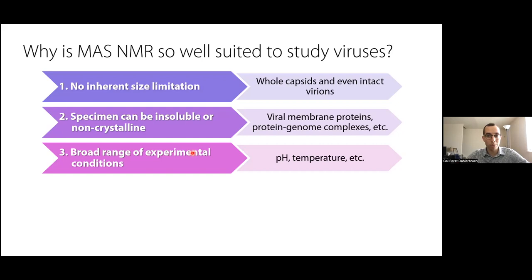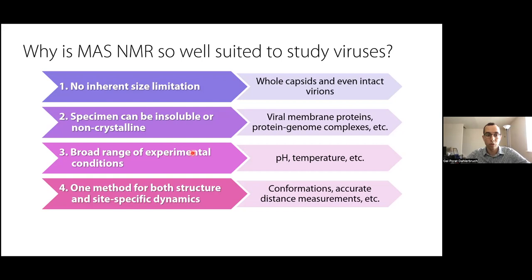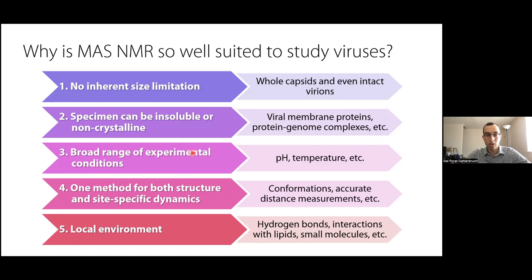Third, a broad range of experimental conditions are available, especially when working with sediments, since we can avoid specific crystallization conditions. One interesting option is to work at cryogenic temperature to attenuate dynamics in proteins, or change to higher temperatures and variable pH levels. Fourth, MAS NMR can be used to study the secondary and tertiary structure of the target protein, as well as dynamics on many timescales — from specific domain dynamics to single side chain dynamics. We can accurately measure distances between nuclei and spin labels. Fifth, MAS NMR provides unique physicochemical information on the local environment of the detected nuclei, including binding pockets, hydrogen bonds, and interactions between membrane proteins and lipids.